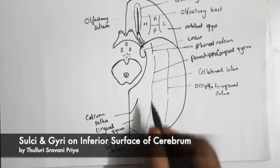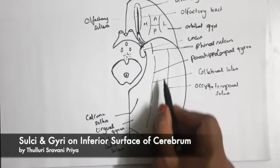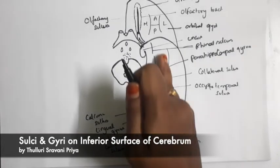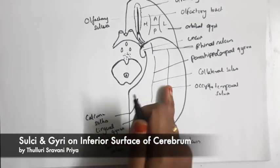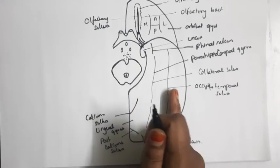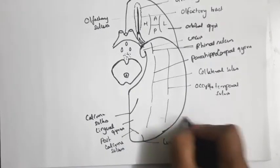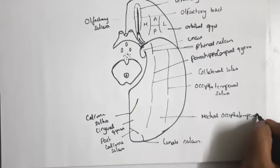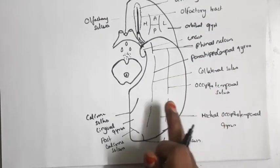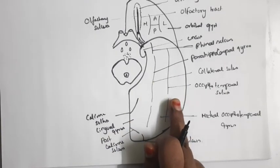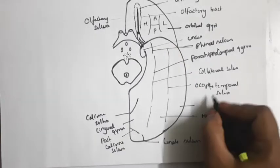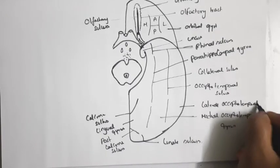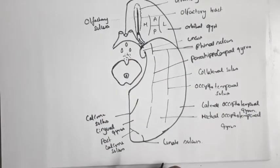So this is the collateral sulcus, calcarine sulcus, lingual gyrus, and parahippocampal gyrus. Now we will see the gyrus seen in this area — the gyrus present between these two areas. Medially, this area is limited by the collateral sulcus, and laterally by the occipitotemporal sulcus. This area is known as the medial occipitotemporal gyrus. The area seen laterally to the occipitotemporal sulcus is known as the lateral occipitotemporal gyrus. These are the sulci and gyri present on the inferior surface, on the tentorial part.